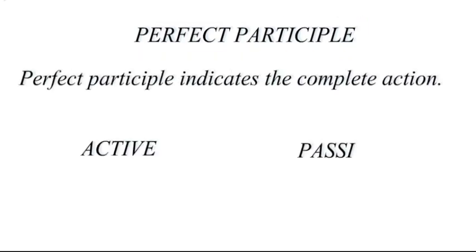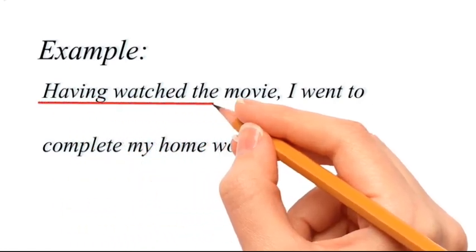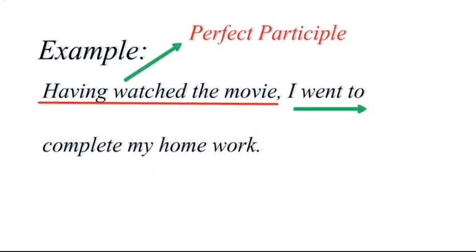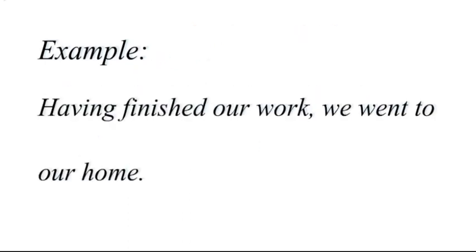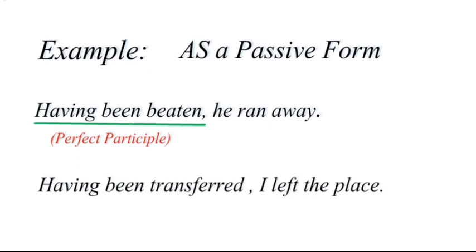A perfect participle indicates a completed action, either in active or passive form. Active form: 'having' plus the verb's third form. Passive form: 'having been' plus verb's third form. 'Having watched the movie, I went to complete my homework' — 'having watched' shows one action is fully completed before the next begins. 'Having been beaten, he ran away' and 'Having been transferred, I left the place' are examples of perfect participle in passive form.